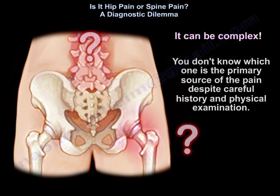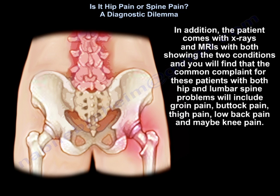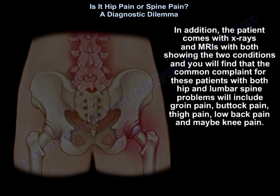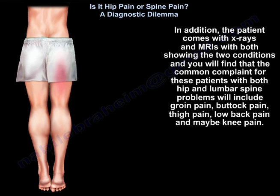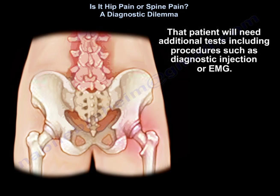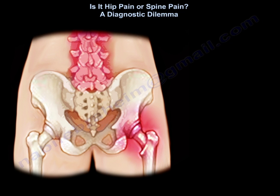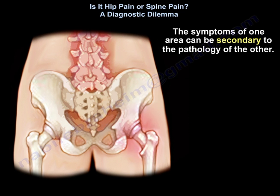Or the syndrome can be complex — you don't know which one is the primary source of pain despite careful history and physical examination, and the patient presents with X-rays and MRIs showing both conditions. Common complaints for patients with both hip and lumbar spine problems include groin pain, buttock pain, thigh pain, low back pain, and sometimes knee pain. Additional tests, including diagnostic injections or EMG, may be needed.